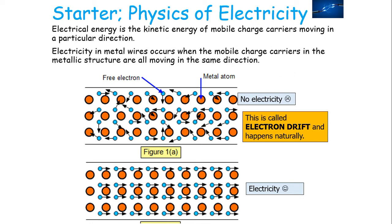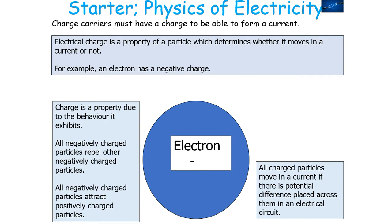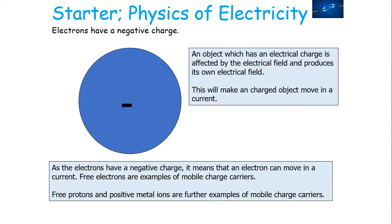If you have no electricity in your wire, the electrons are moving around randomly, which we call electron drift. But when there is electrical energy in a wire, all of the mobile charge carriers are moving in the same direction. Electrical charge is the property of a particle which determines whether it moves in the current or not. All charged particles move in a current if there is a potential difference placed across them in an electrical circuit.